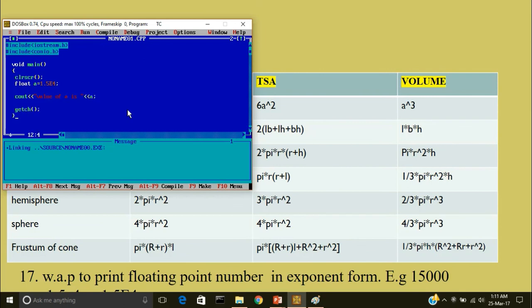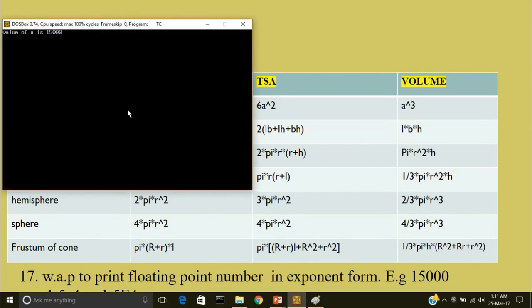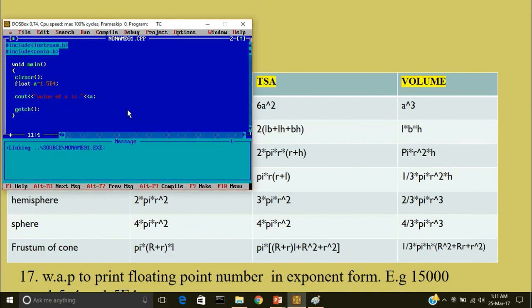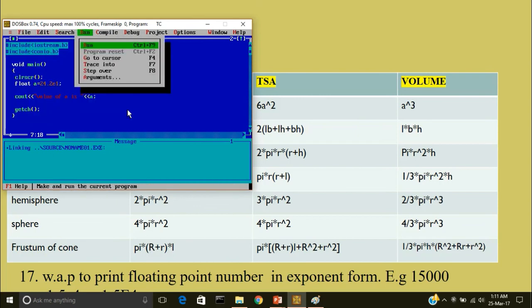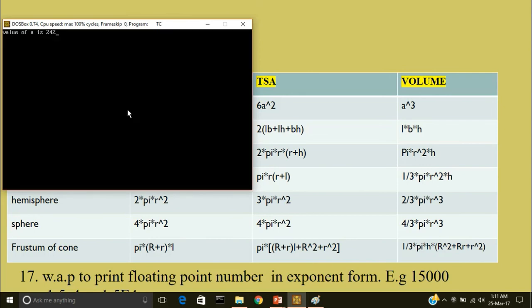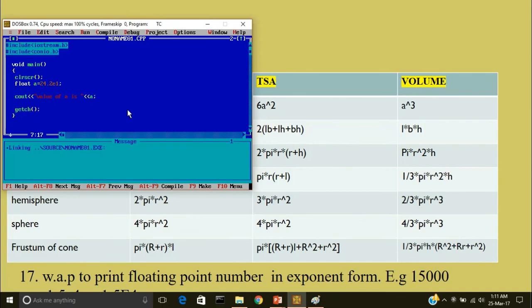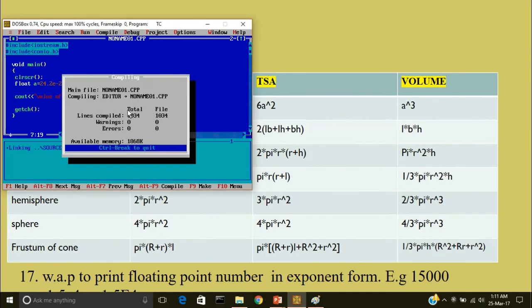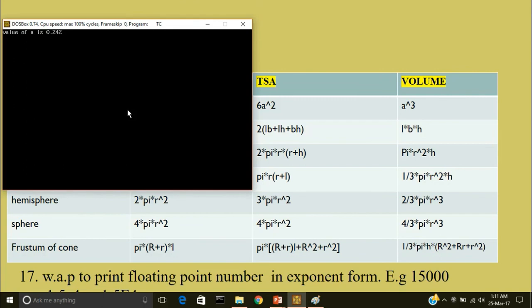So the value of a is 15,000. So can you tell me what would be the output when I'll write a is equal to 2.42E2? So what would be the output? Just pause the video. I'll compile the program. So the answer is 242. It's not necessary that power can be positive. You can keep the power negative as well. Suppose I'll keep the power minus 2. Now I'll run the program. So the value of a is 0.242.